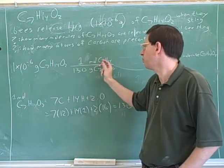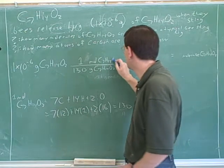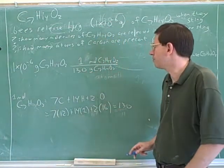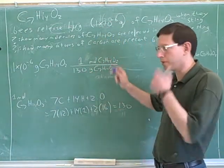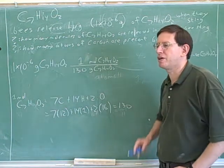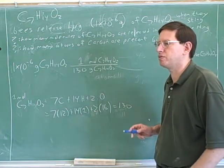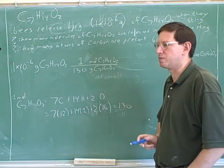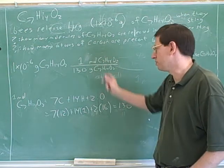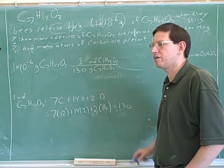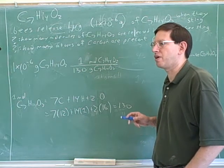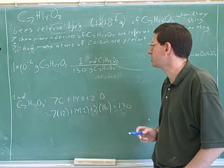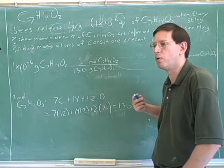The periodic table is talking about one mole of this molecule having this mass. Your question was that you weren't quite sure what to put on the top here. Remember that what the periodic table gives you is conversions between grams and moles. In particular, the periodic table tells you how many grams there are in one mole of something.